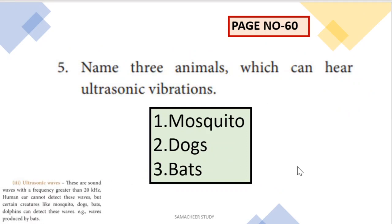Next question: name three animals which can hear ultrasonic vibrations. The audible range of sound is 20 to 20,000 hertz. Ultrasonic waves are above 20,000 hertz. Animals that can hear ultrasonic vibrations include mosquitoes, dogs, and bats — and additionally, dolphins.